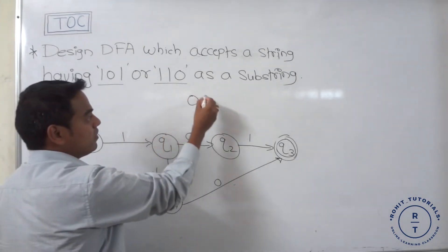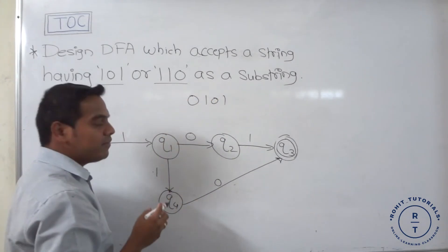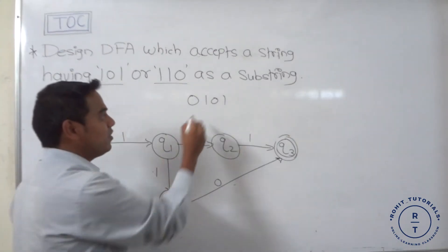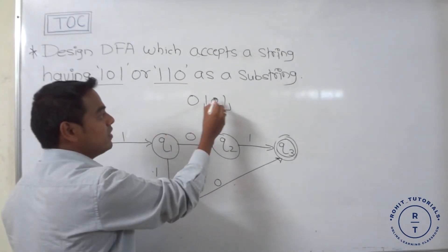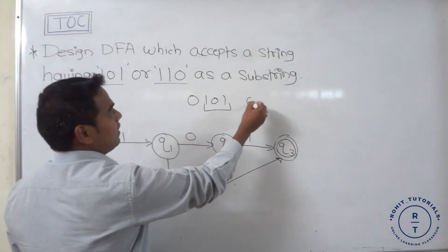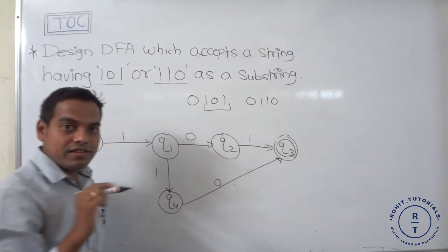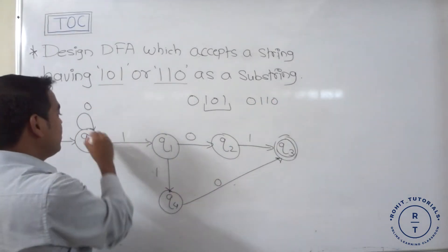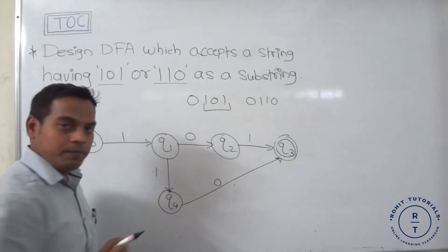For example, the string 0101 is accepted by the finite automata because it consists of the substring 101. And the string 0110 is also accepted by the finite automata because it contains the substring 110.